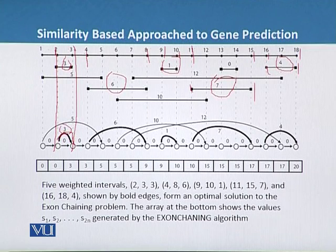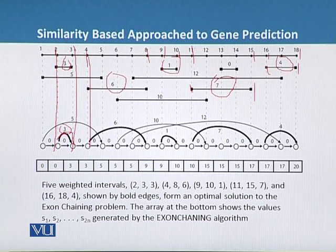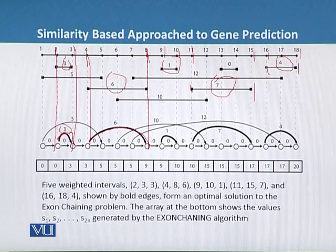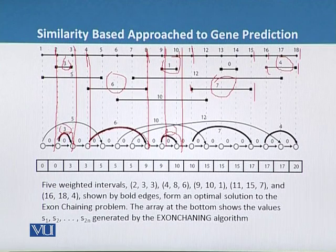Second is starting from 4. And we can see that the bold lines represent these weighted intervals. This is the second one starting from 4 and ending at 8. Third one is starting from 9 and ending up at 10 with a weight of only 1.